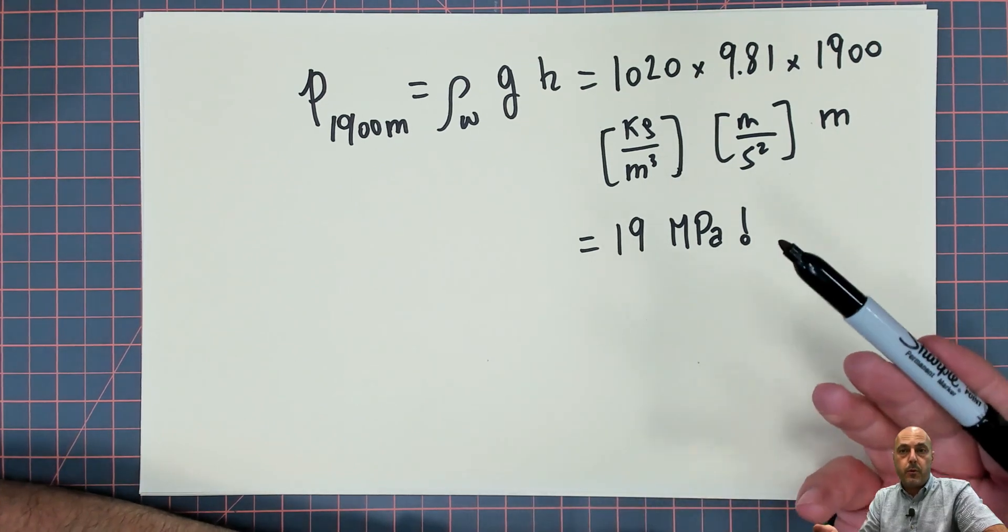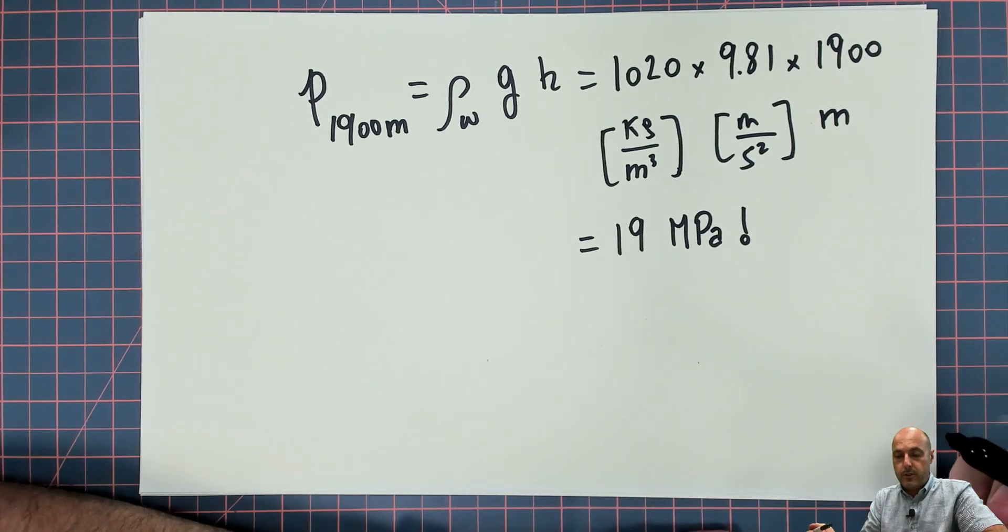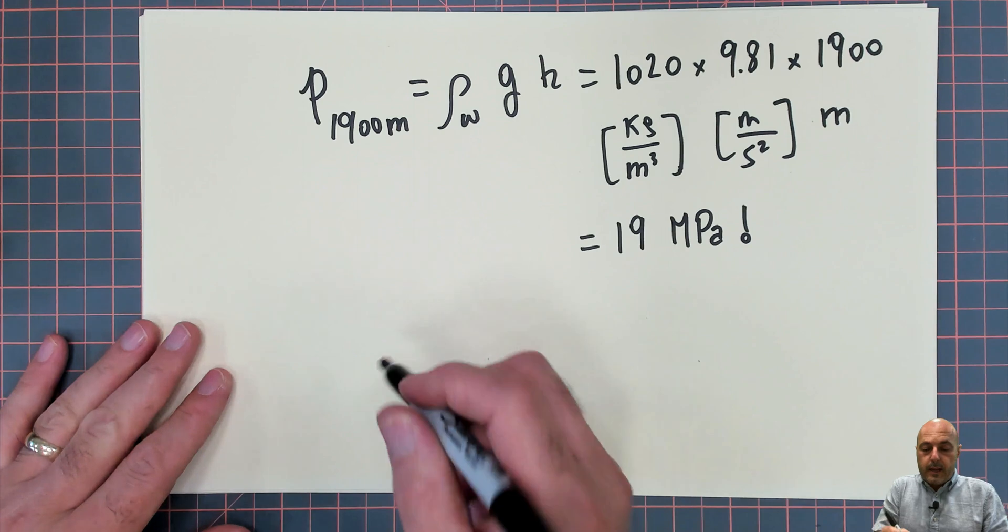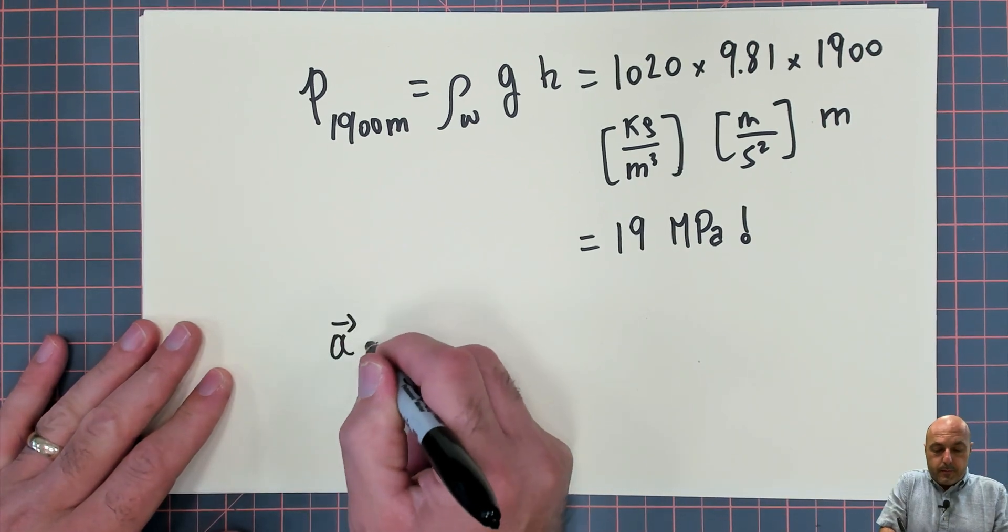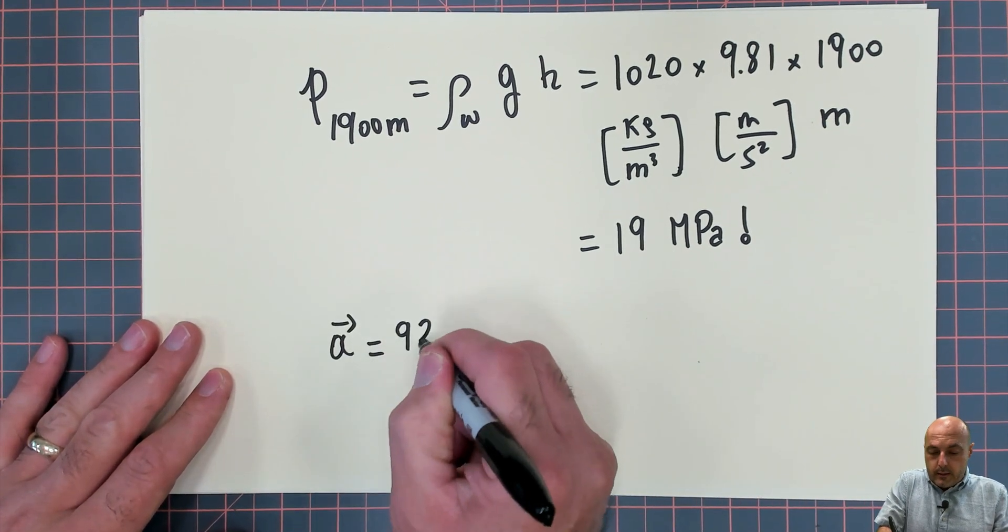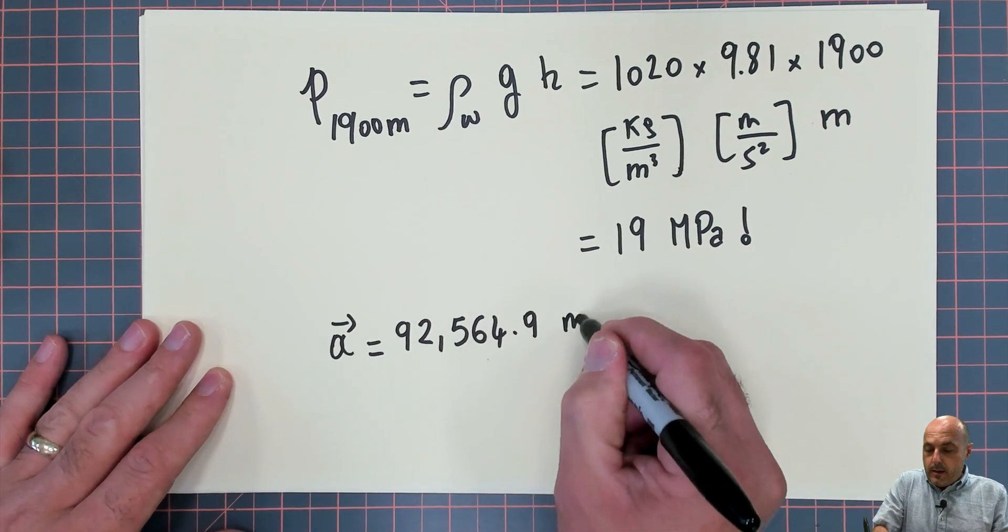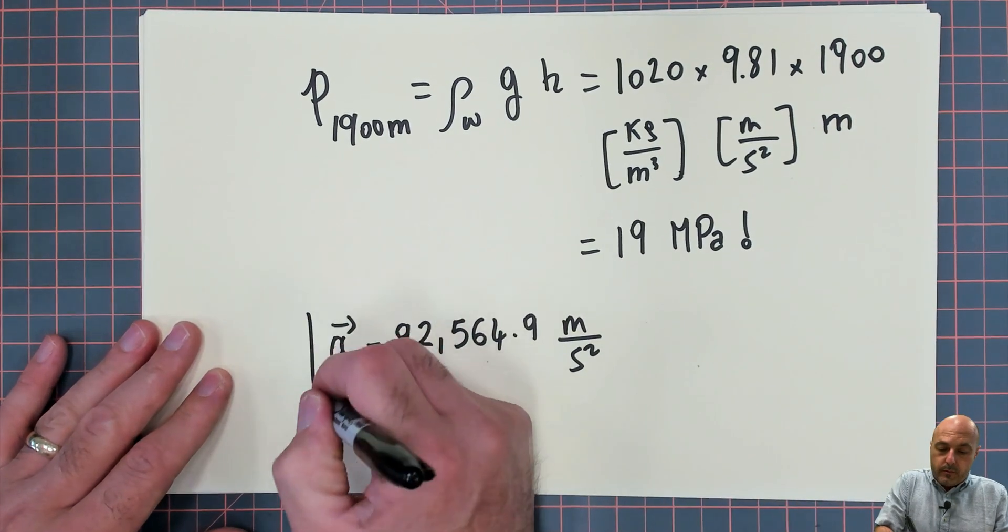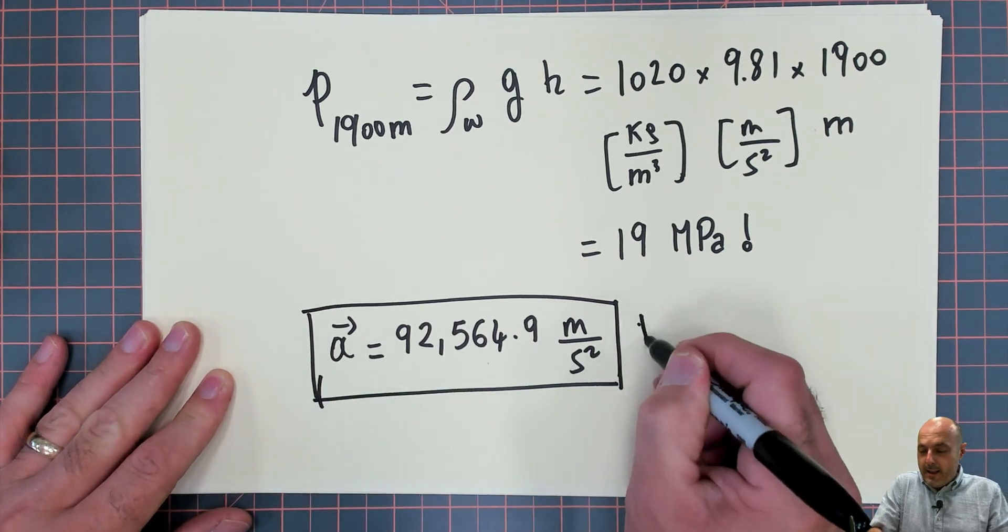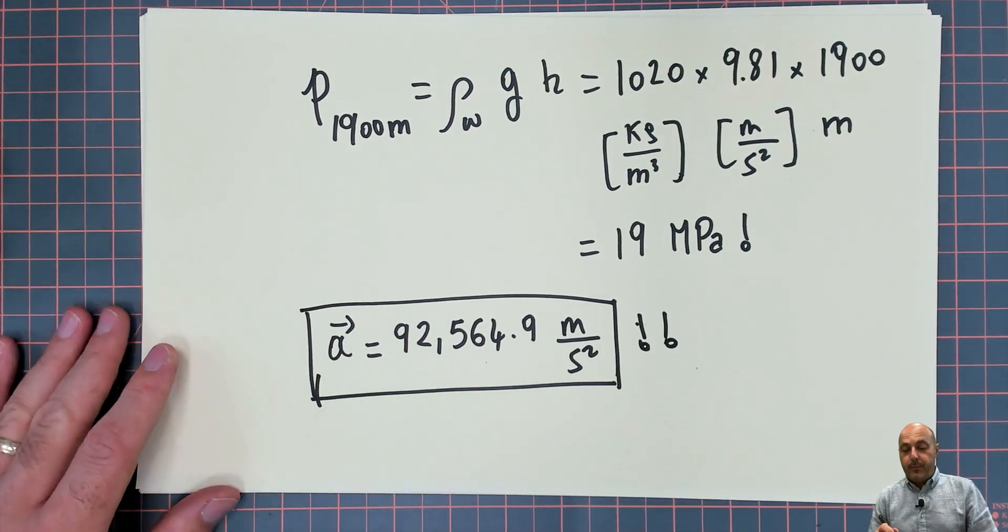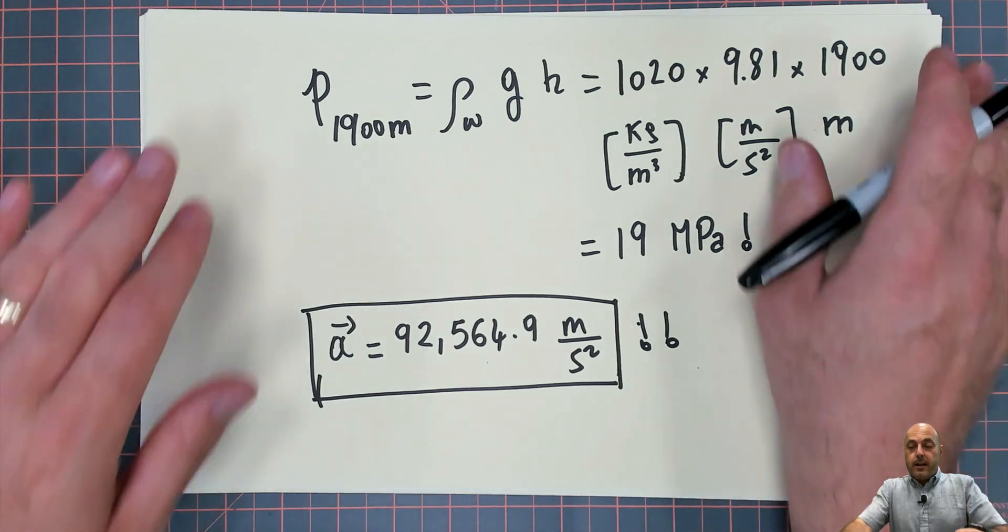And from that we can compute the actual acceleration. So you plug in these numbers and that acceleration comes out to be A is equal 92,564.9 meters per second squared. That's a really high acceleration. Very high acceleration.